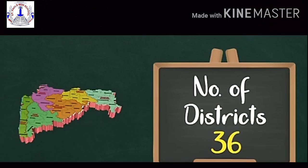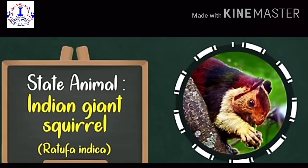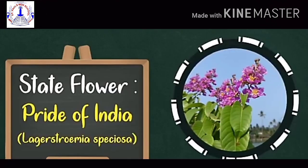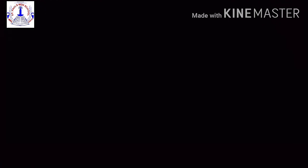Number of districts: 36. State animal: Indian giant squirrel. State bird: Yellow-footed green pigeon. State flower: Pride of India. State tree: Mango.